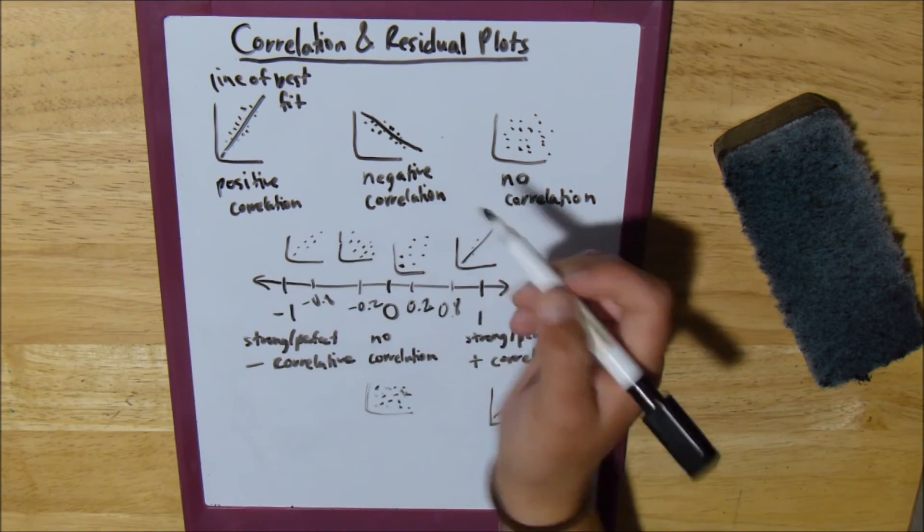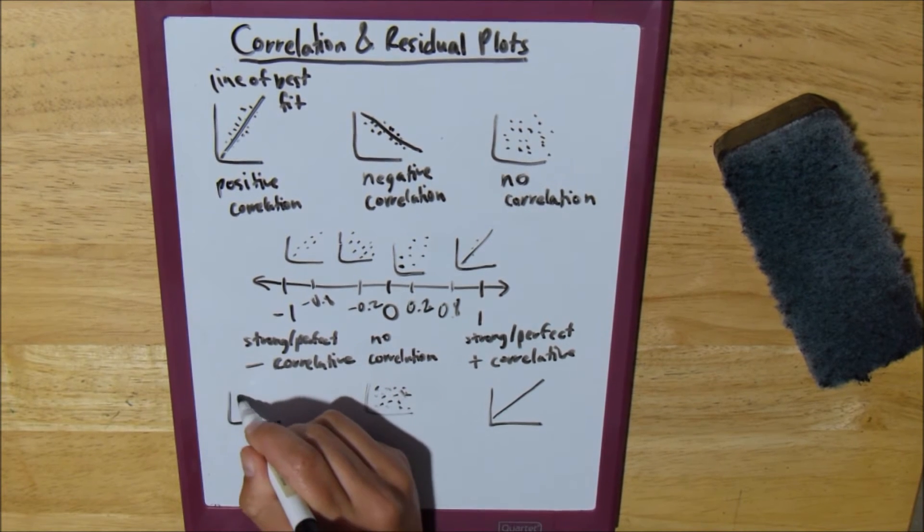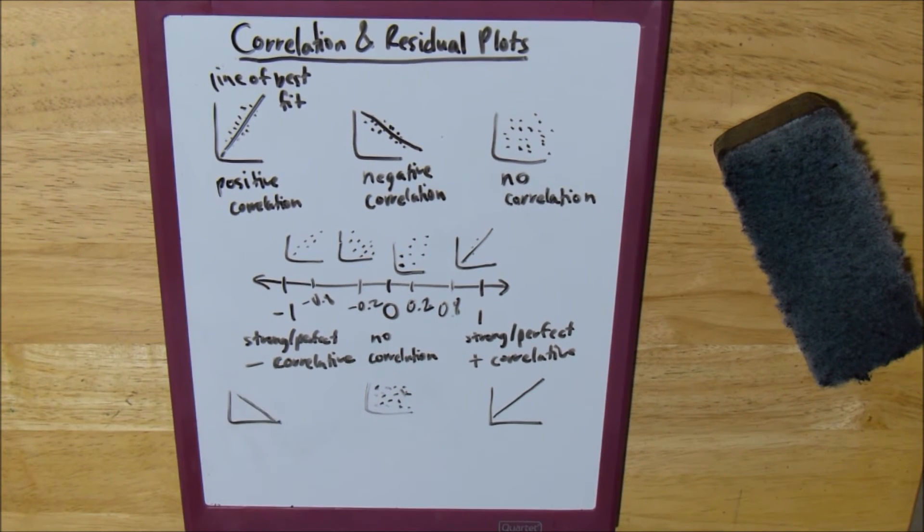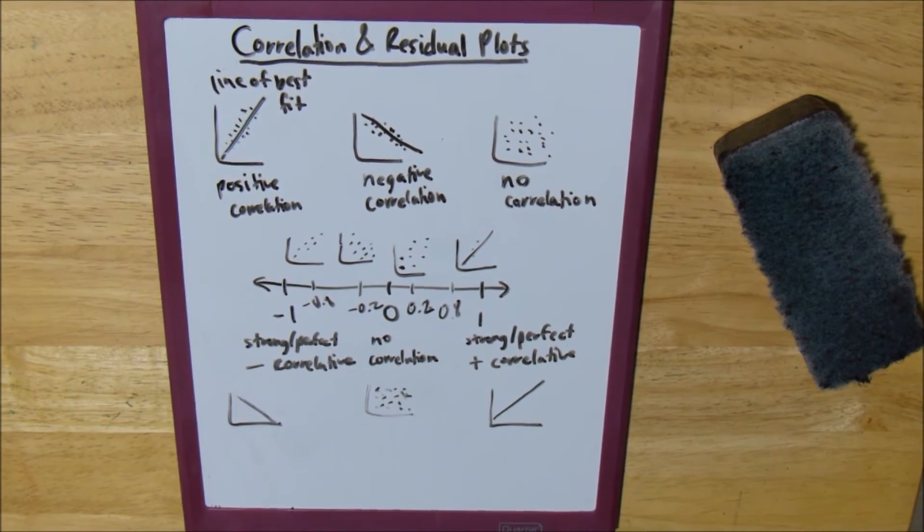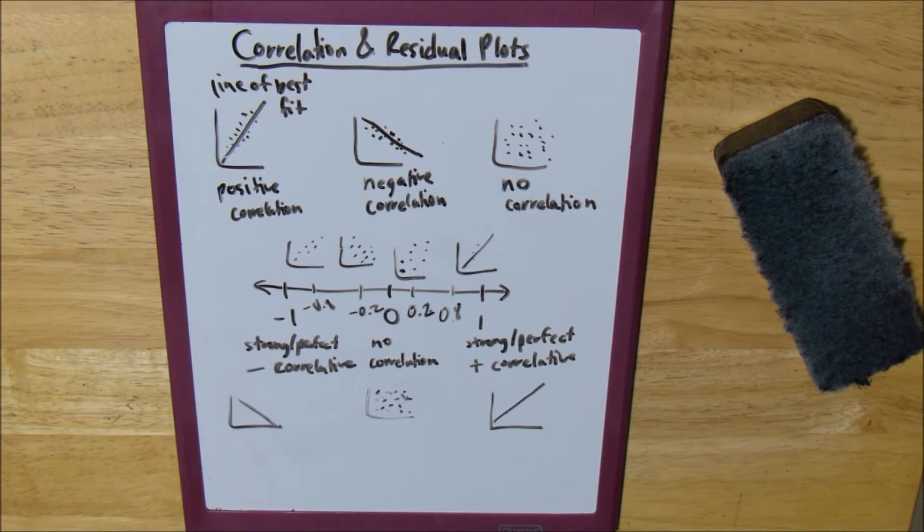And then, negative 1, which is basically just a perfect negative line, alright? And that's what correlation is.